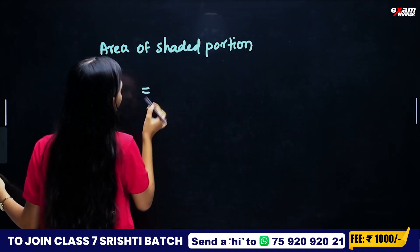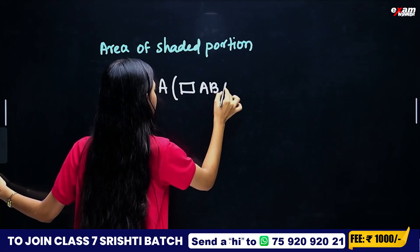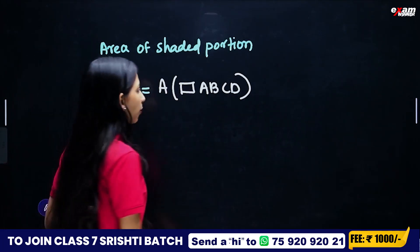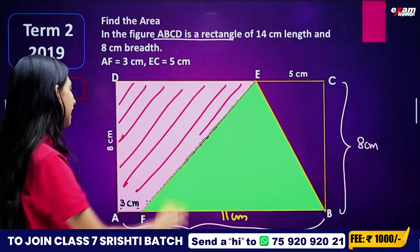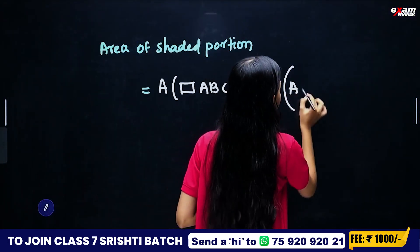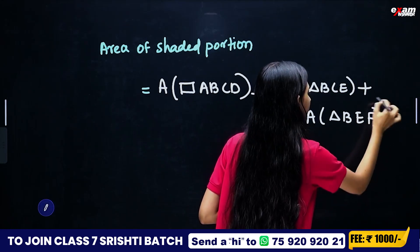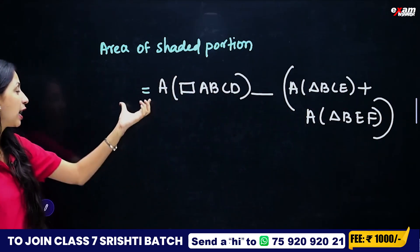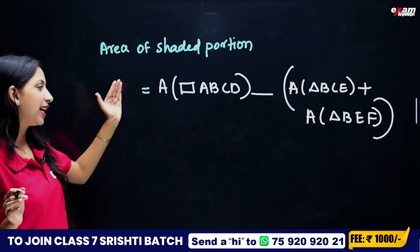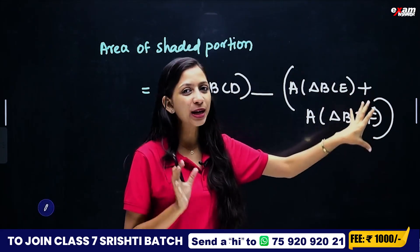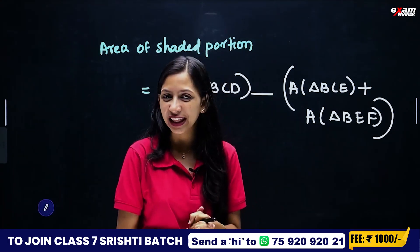Area of shaded region equals area of rectangle ABCD minus area of triangle BCE minus area of triangle BEF. We subtract both triangles from the total rectangle. The result gives the area of the trapezium, which is the shaded region. So: 112 minus 20 minus 44 gives the shaded area.